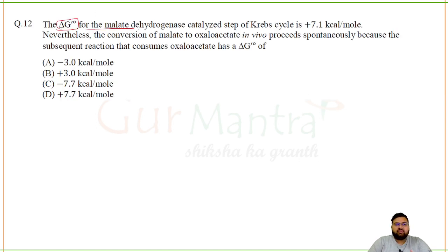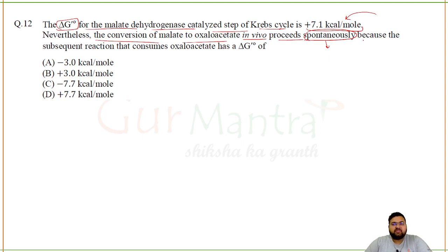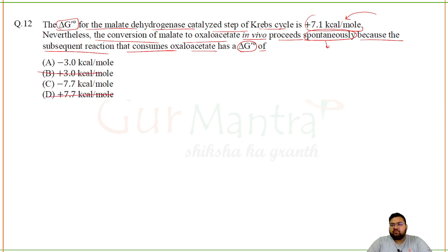Delta G° for the malate dehydrogenase-catalyzed step in the Krebs cycle is +7.1 kcal/mol — meaning energy input is required. Nevertheless, the conversion of malate to oxaloacetate in vivo proceeds spontaneously because the subsequent reaction consuming oxaloacetate has a very negative delta G°. That subsequent reaction has delta G° = −7.7 kcal/mol.